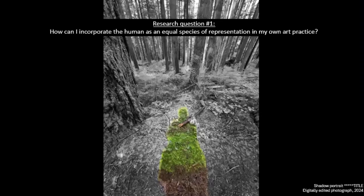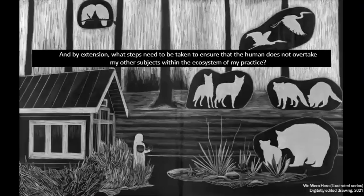I have three main research questions that are unfolding at this point. Number one: how can I incorporate the human as an equal species of representation in my own art practice? And by extension, what steps need to be taken to ensure that the human does not overtake my other subjects within the ecosystem of my practice?